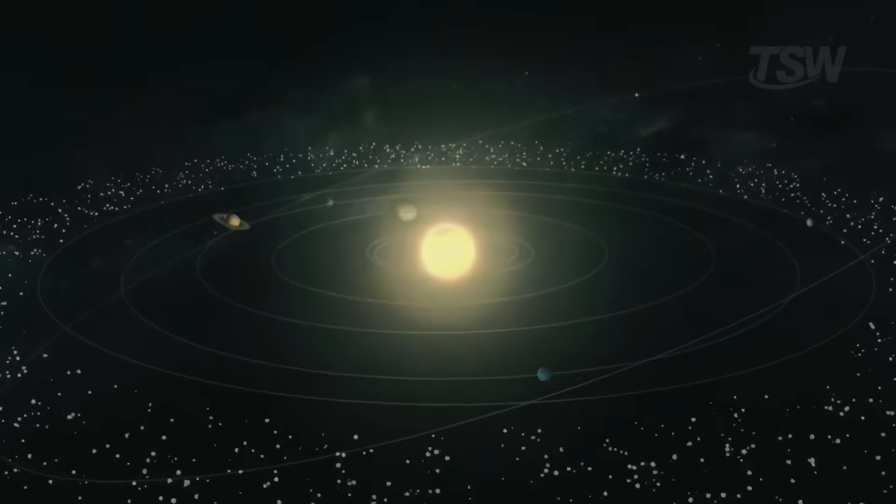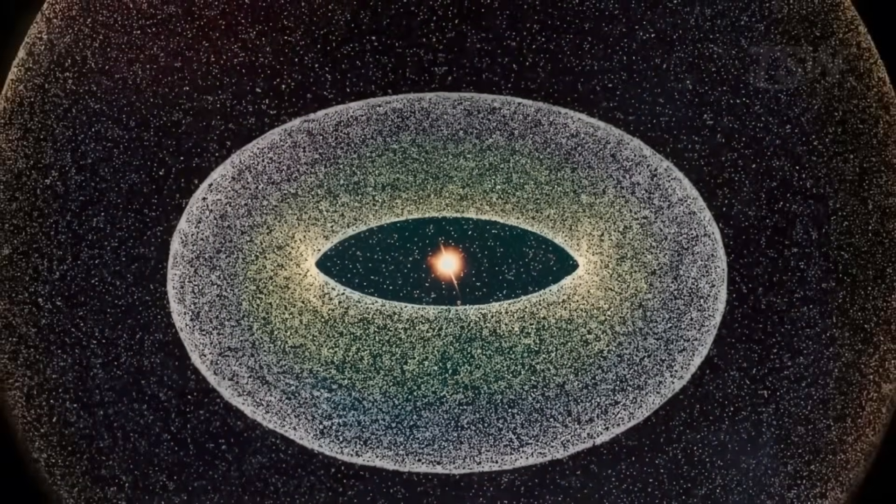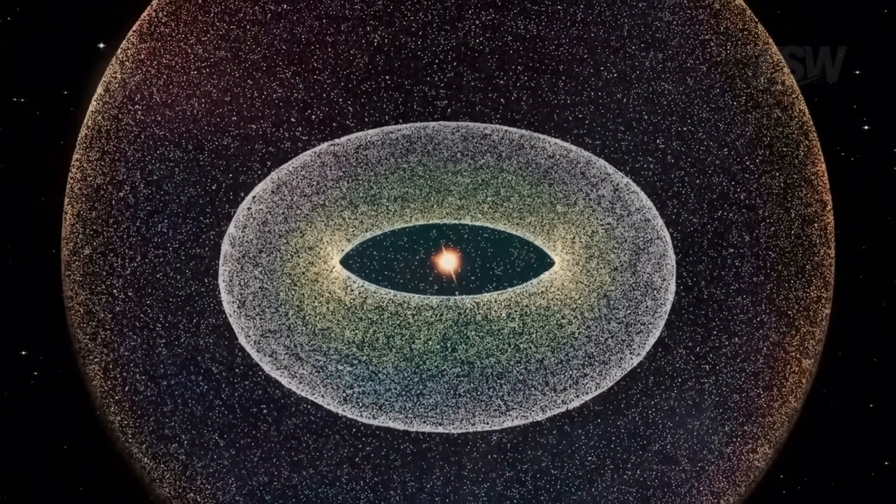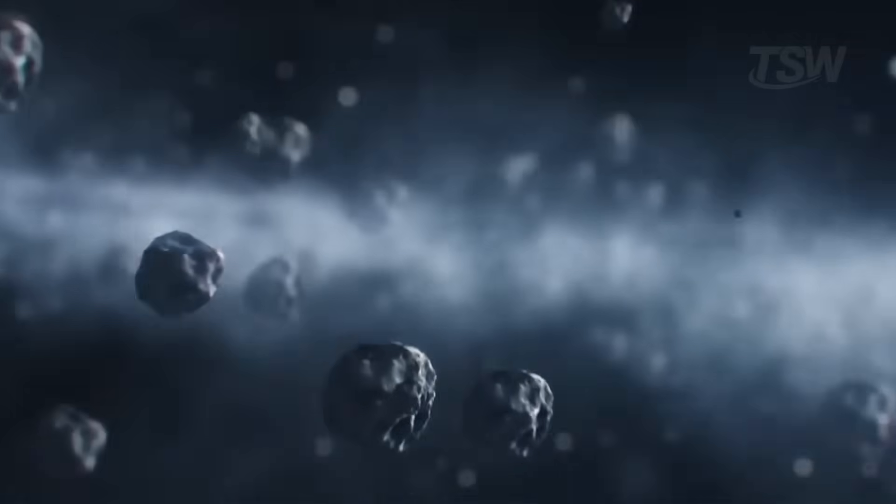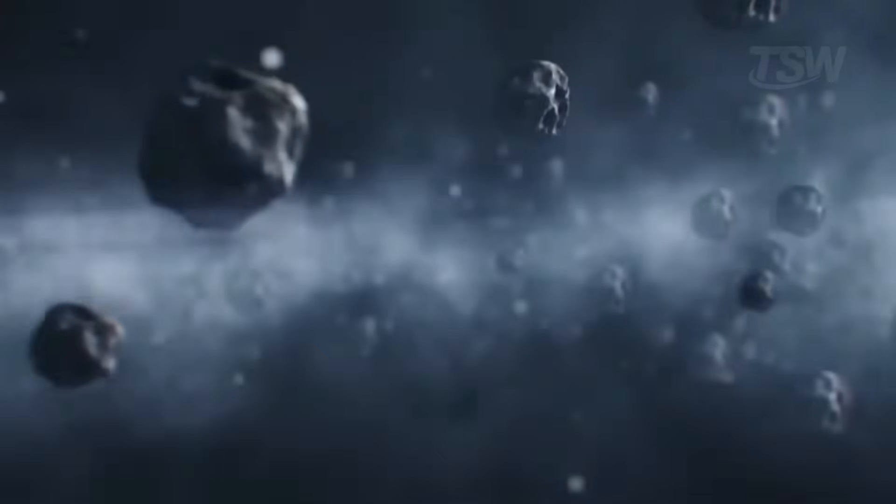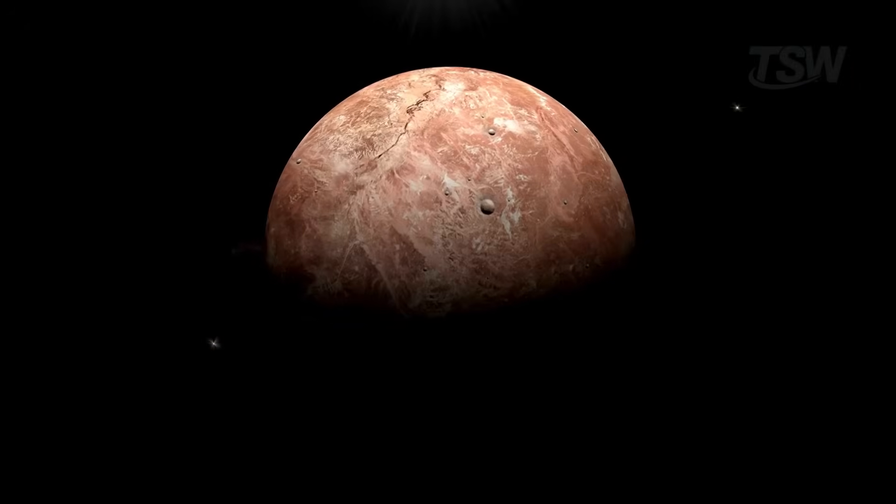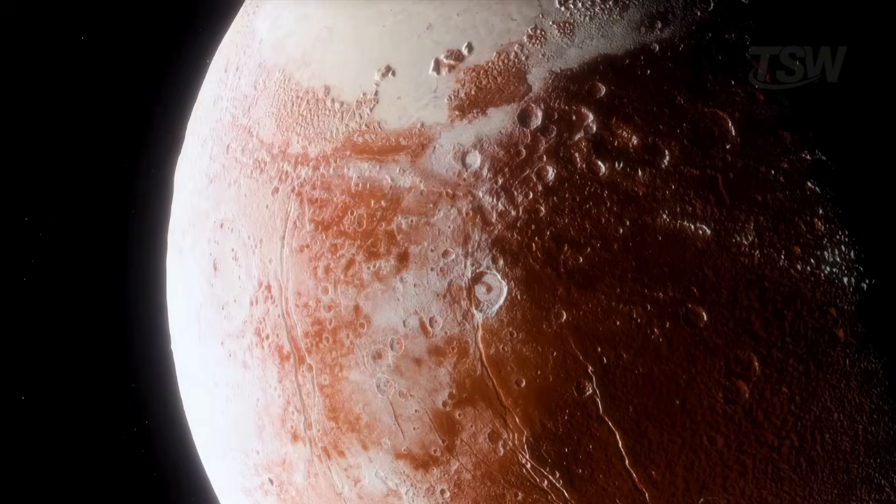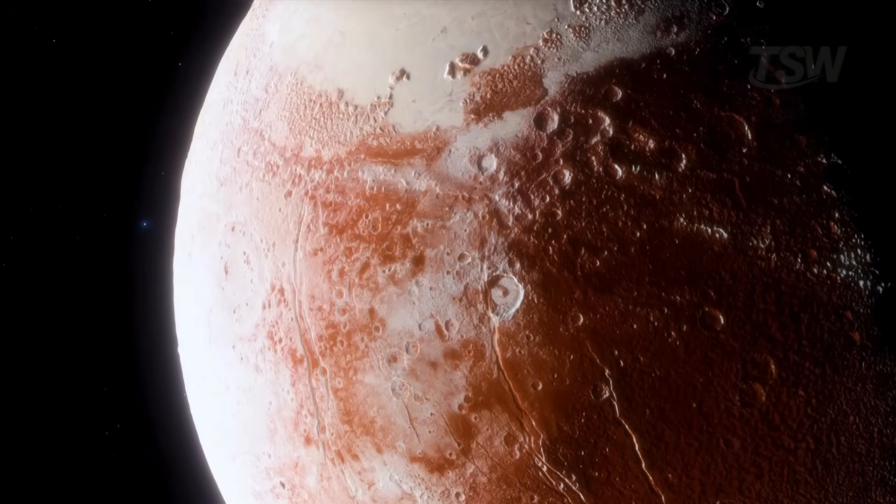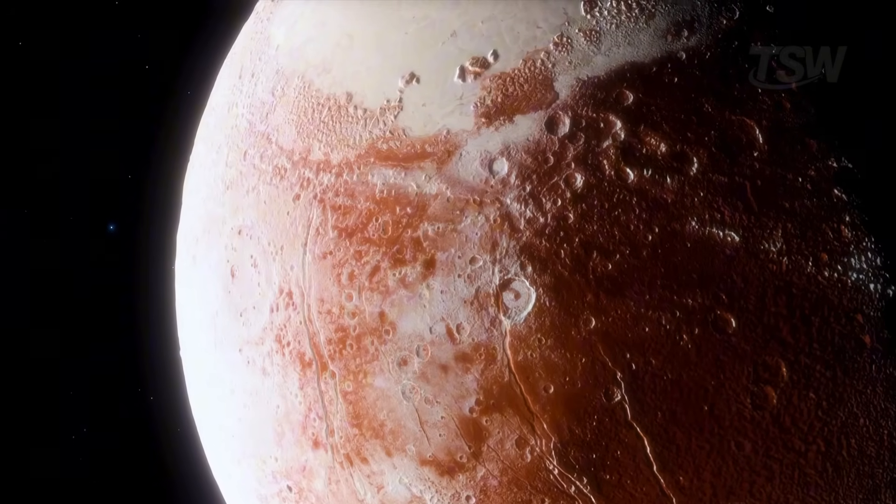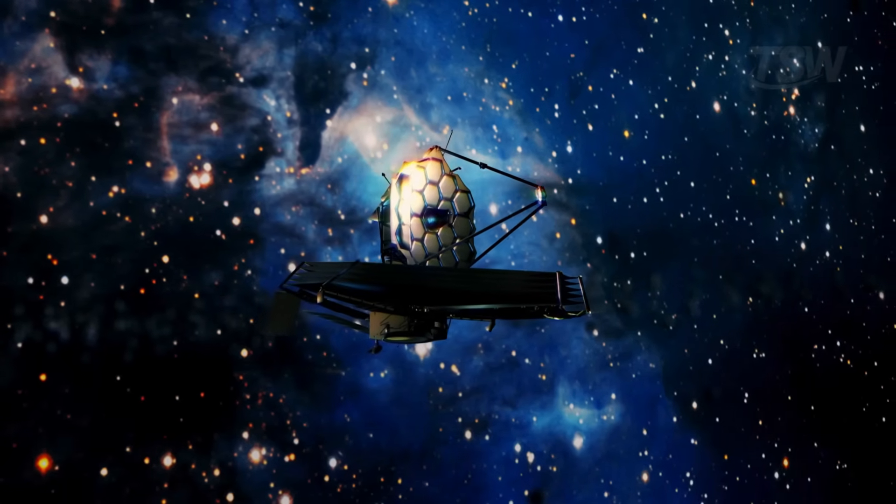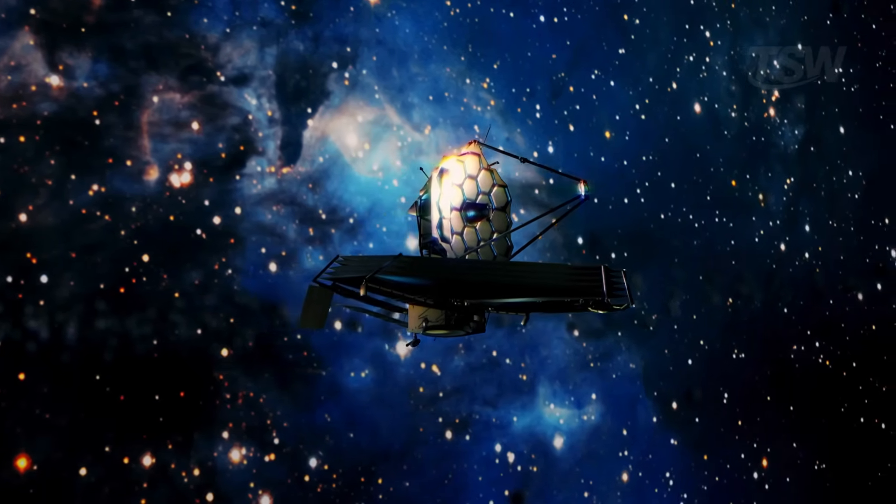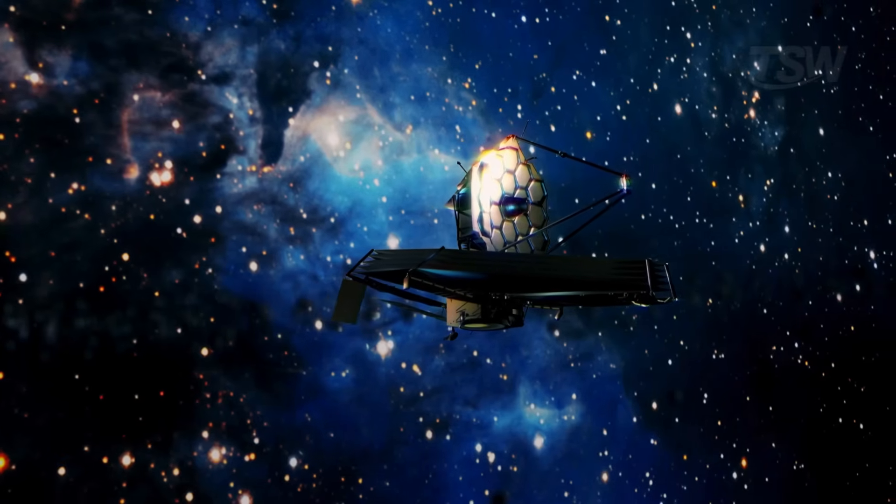Far beyond Neptune's orbit lies a vast region full of enigmatic celestial bodies. They're not classical planets, nor just ordinary asteroids. They're icy objects with extremely elongated orbits, so long that some take over 10,000 years to complete a single journey around the sun. For decades, we believed Pluto was the final frontier, the ninth and last planet. But that idea began to crumble as telescopes became more powerful and revealed an entire collection of similar bodies, each with its own quirks.